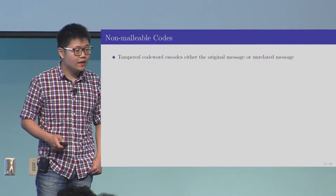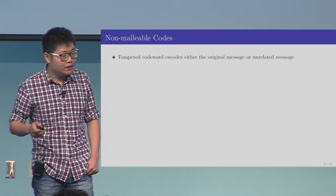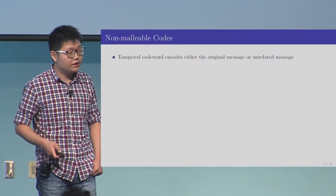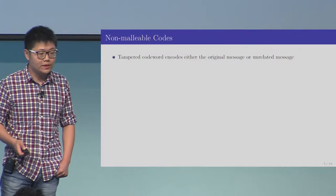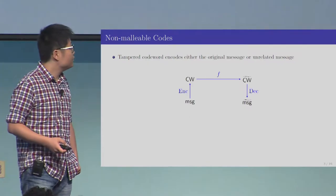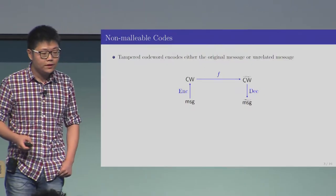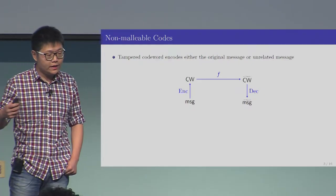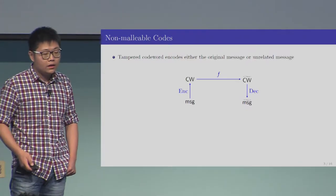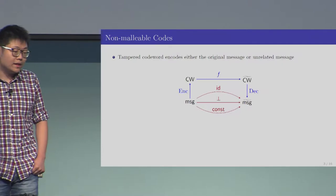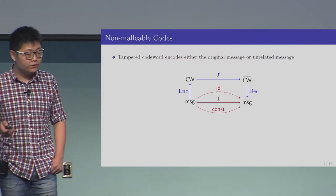Intuitively, non-malleable code is a coding scheme such that if some tampering happens on the codeword, then the tampered codeword either encodes the original message or some message that is completely unrelated with the original message. Specifically, let's say you have a message that is first encoded and then tampered by some function f, and then you get the tampered codeword, and then you decode this to get the tampered message. We want to say that this tampered message could only be related with the original message in three following ways.